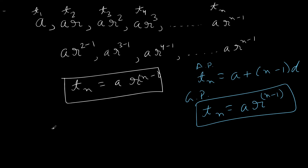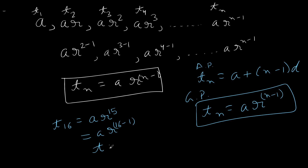For example, the 16th term of a GP is a × r^15, which is ar^(16−1). Similarly, the 20th term is ar^(20−1) = ar^19. This follows quite similarly to our understanding of arithmetic progression.